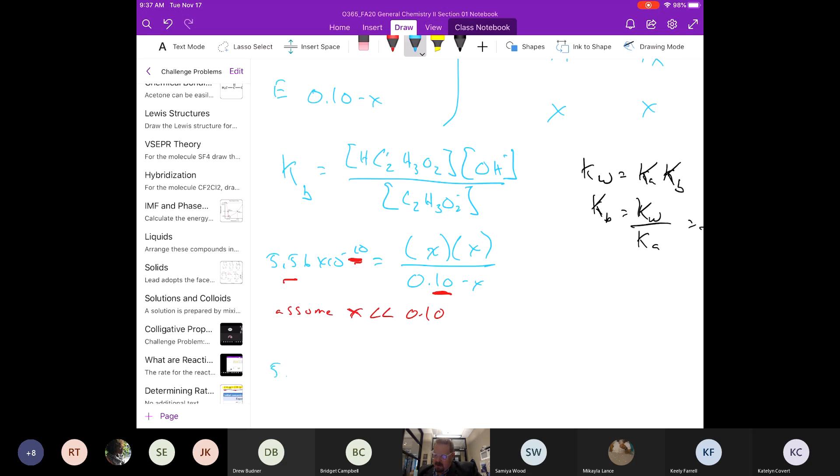Which means that we can rewrite this as 5.56 times 10 to the negative 10th is approximately X squared over 0.1, because we are assuming this X is small.